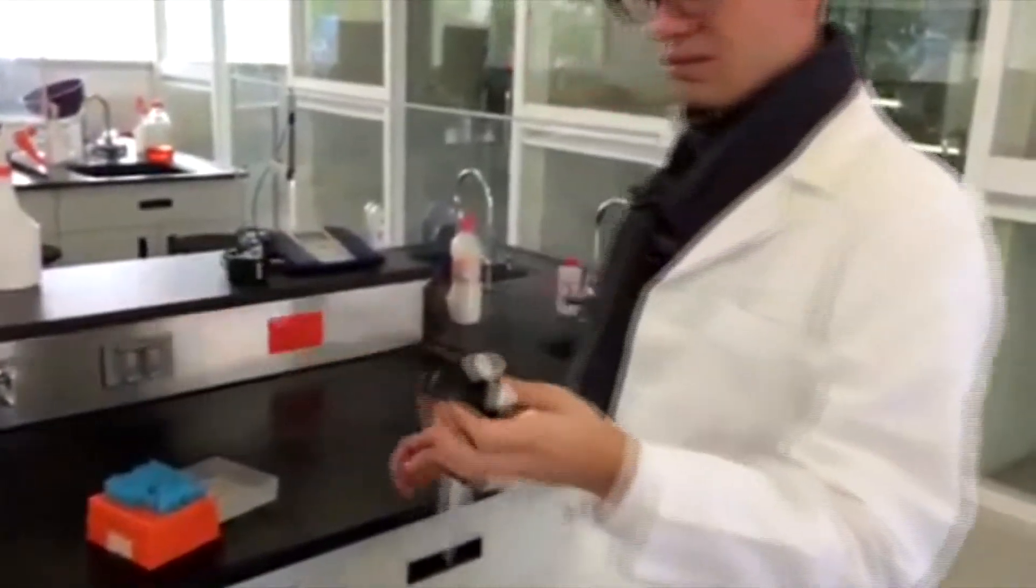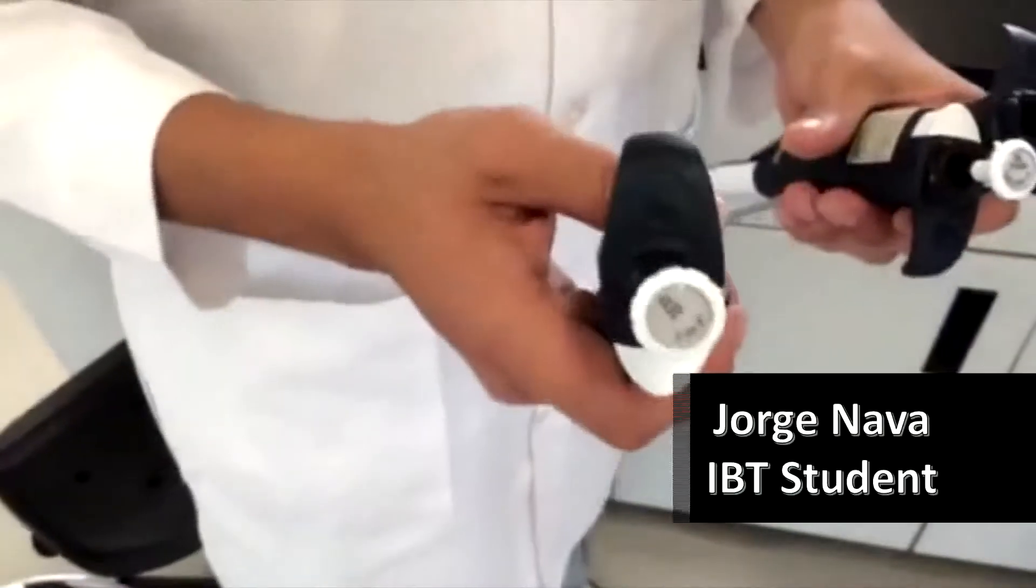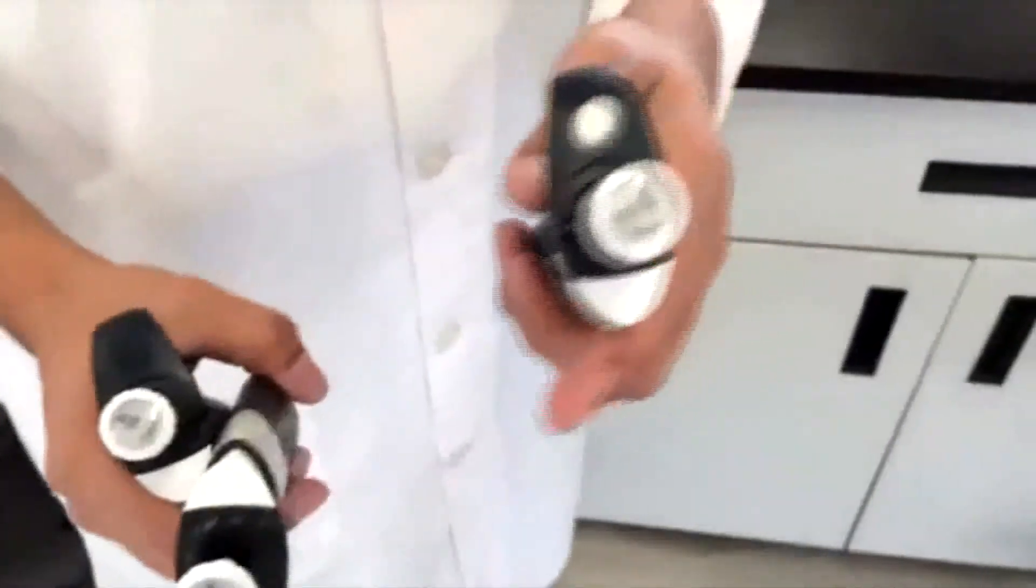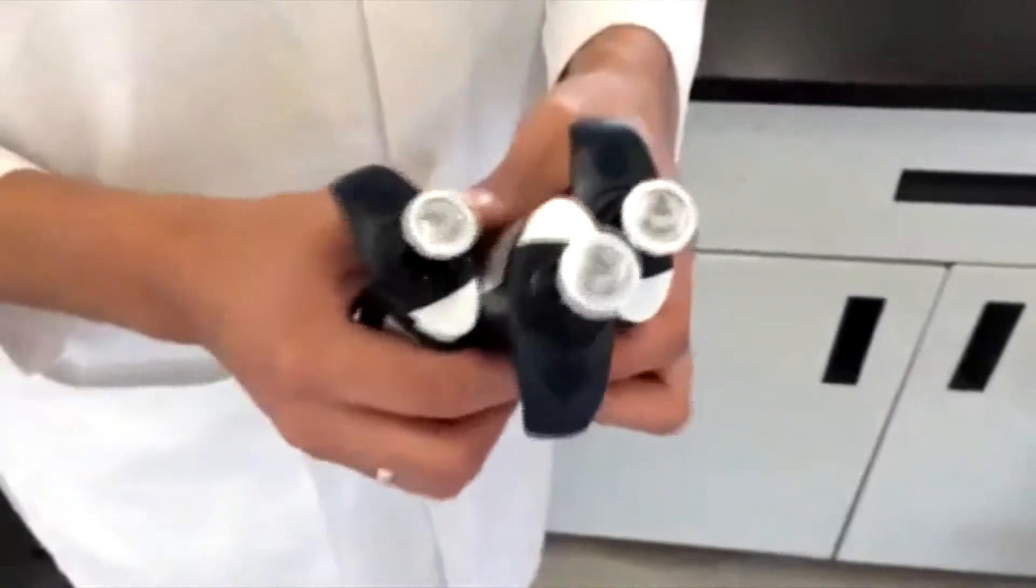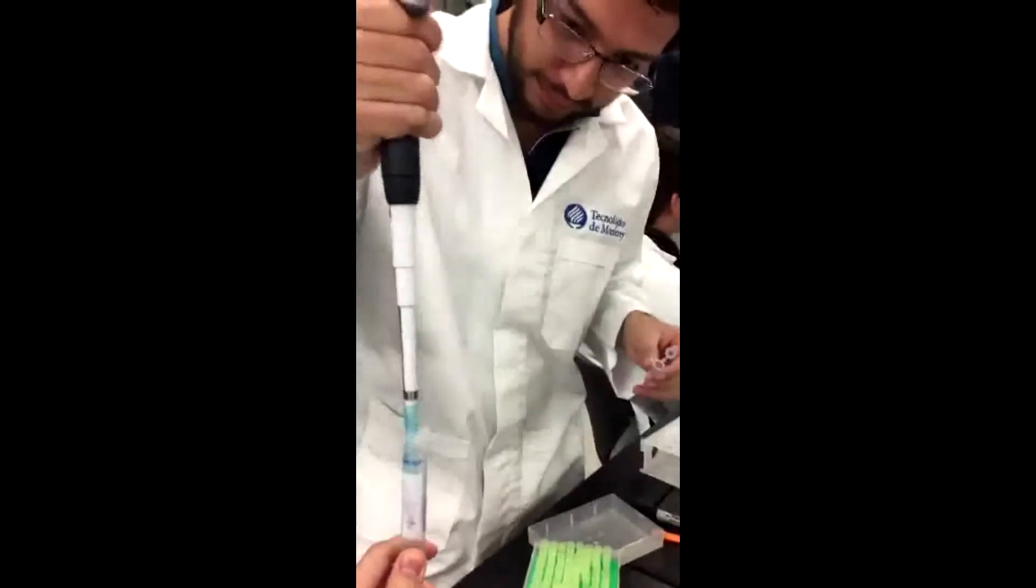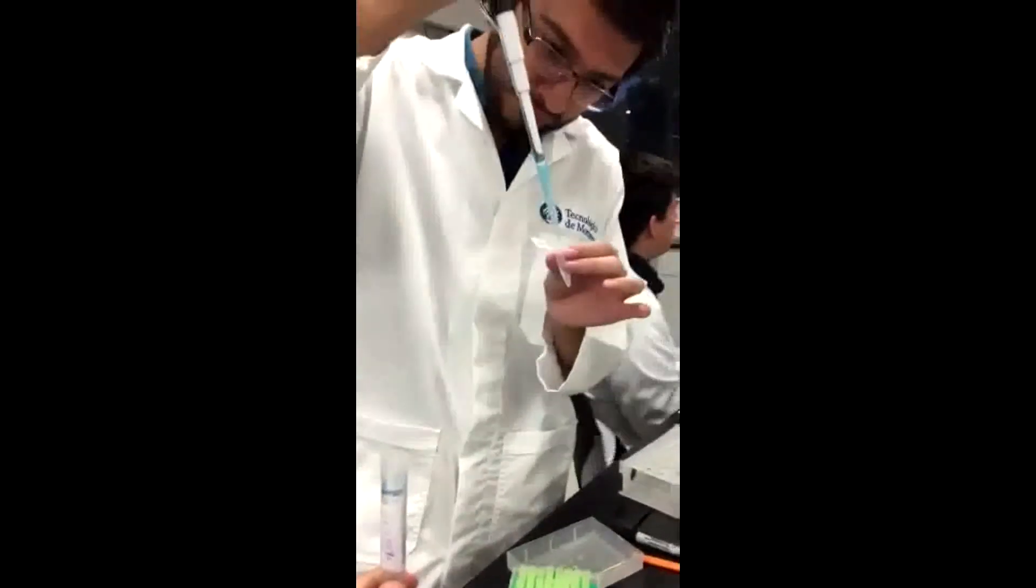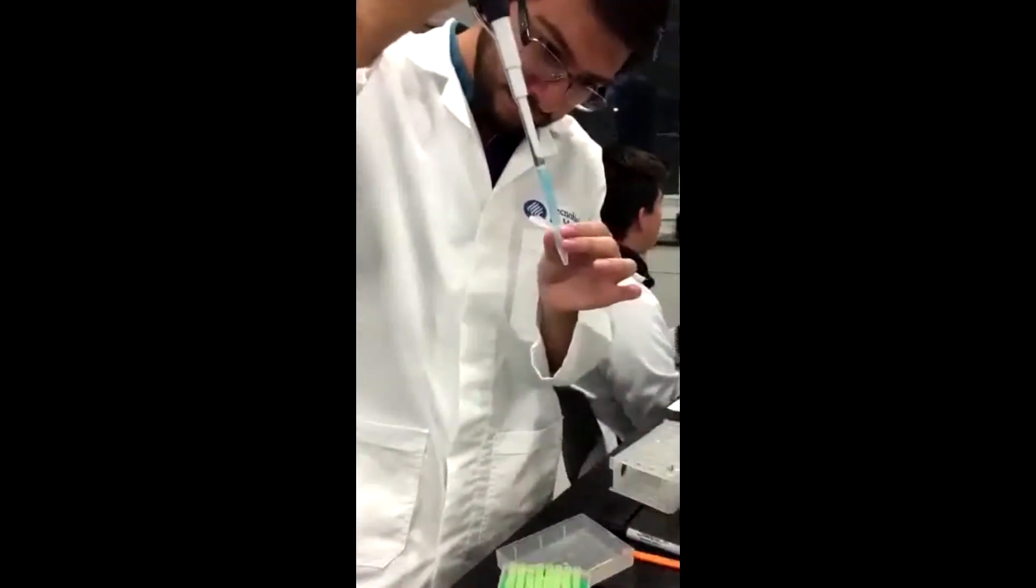In the third experiment, measurements were carried out to determine the reliability of the results of micropipets while working in different volumes, including the maximum and minimum range capacities. The three micropipets that were used were the ones of 20, 200, and 1000 microliters.